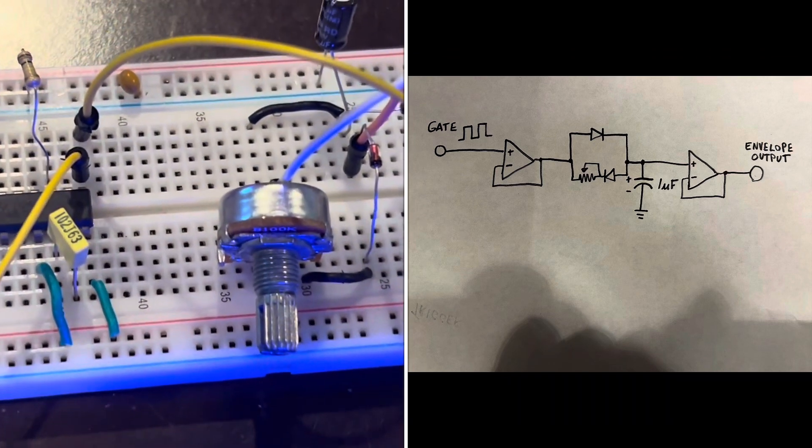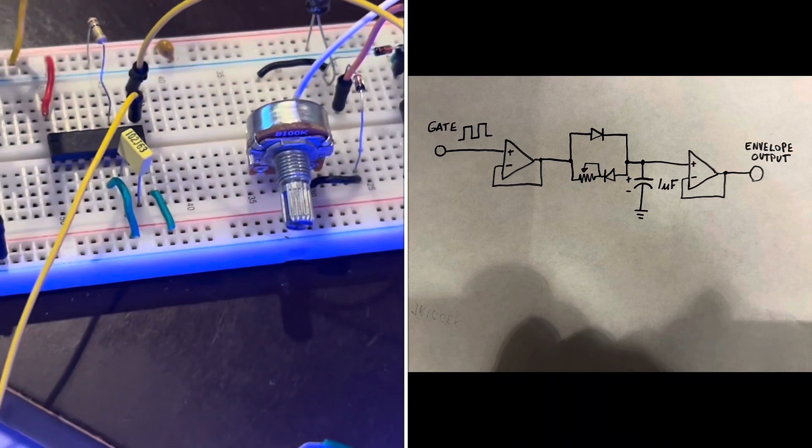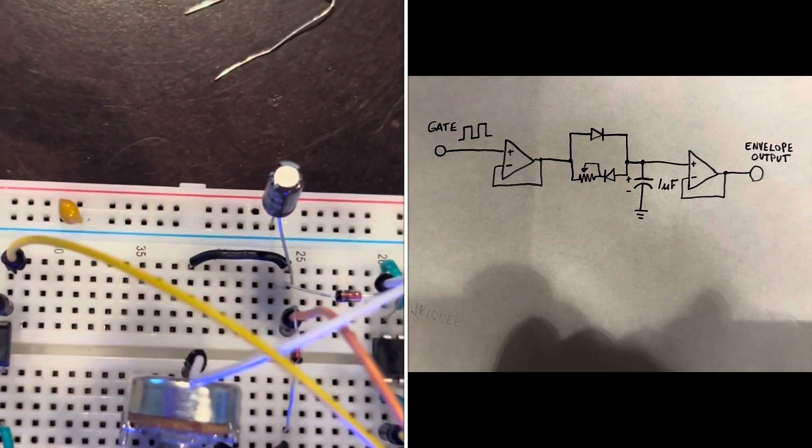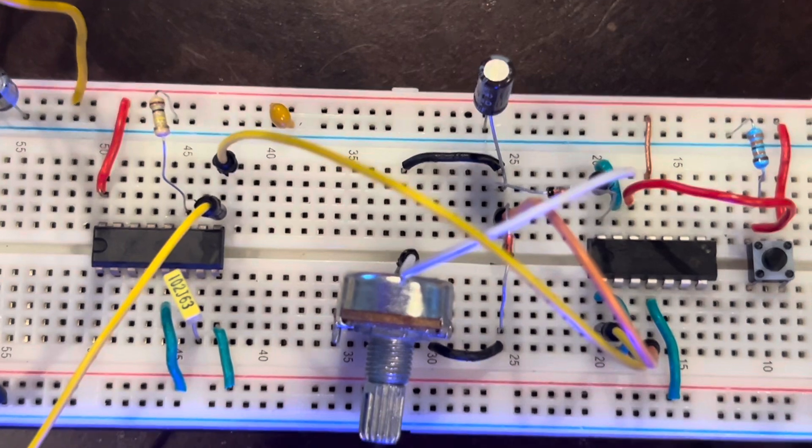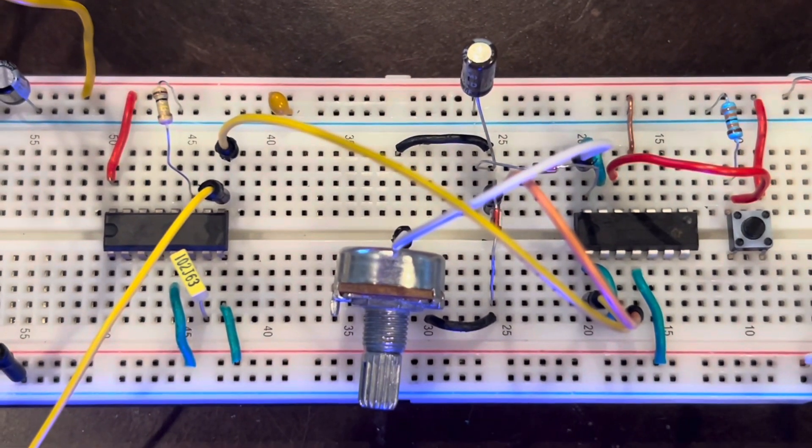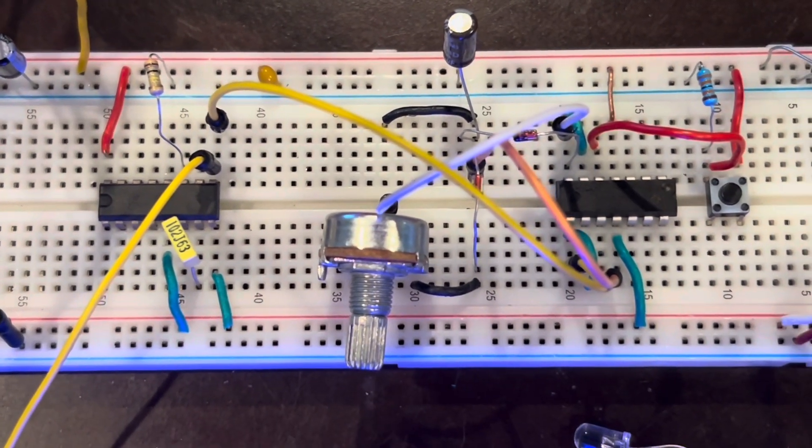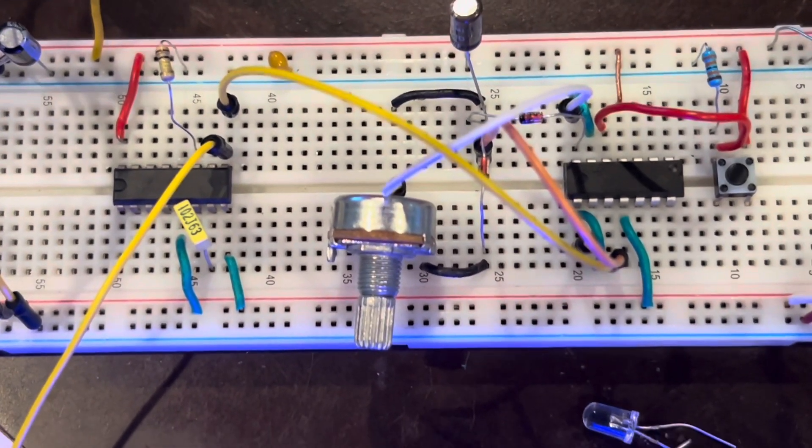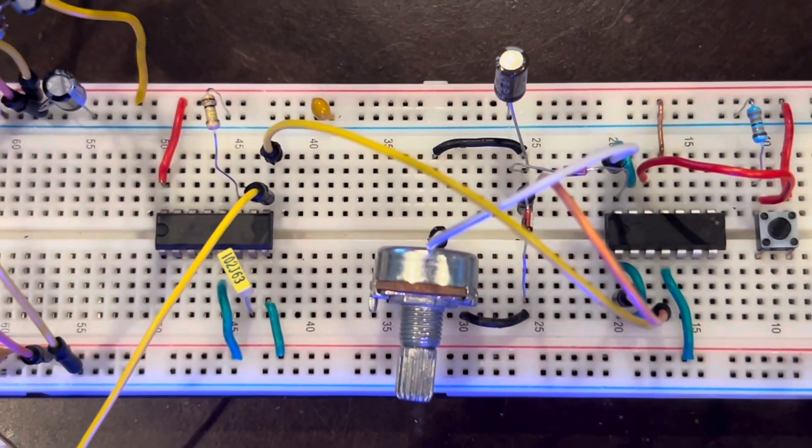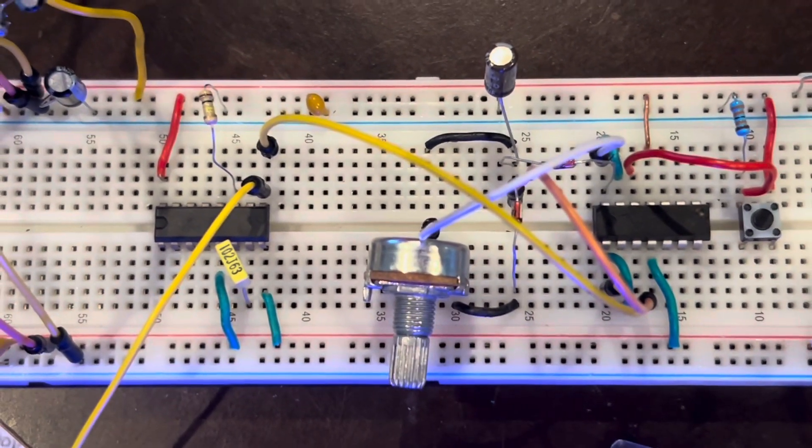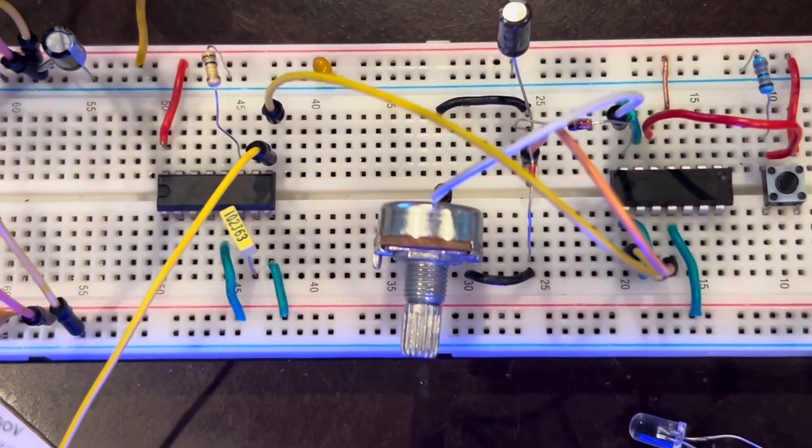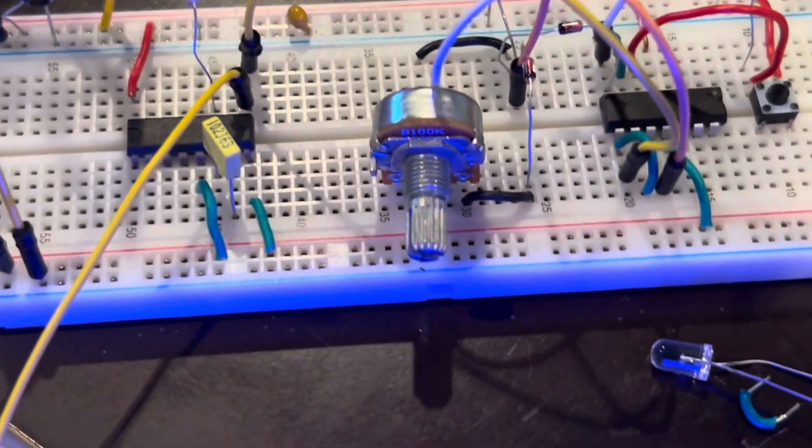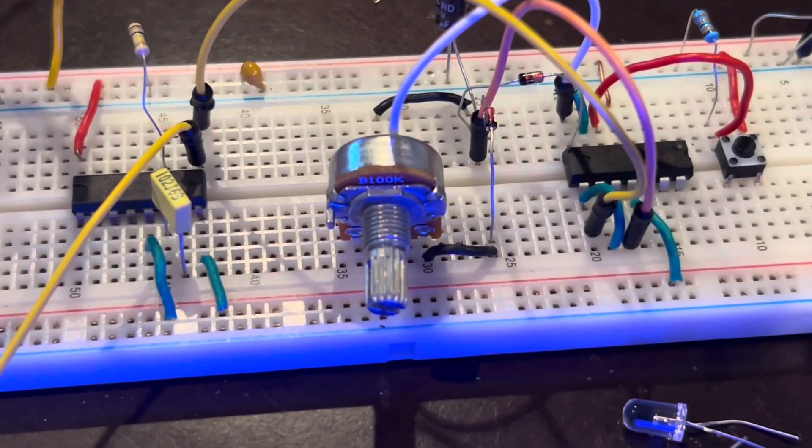And the way the envelope works is it's basically a very simple envelope. It is a decay only envelope. Meaning that the output, when the buffer goes straight through the diode to the capacitor, charging the capacitor instantly. And then the output of the capacitor can decay slowly, based on how much resistance I put through this potentiometer.